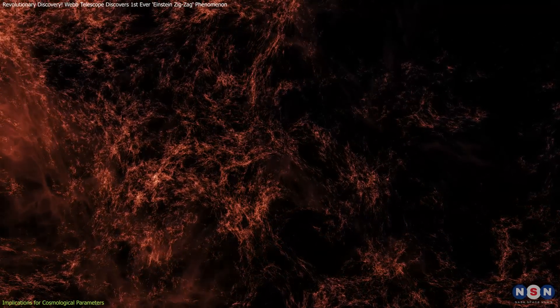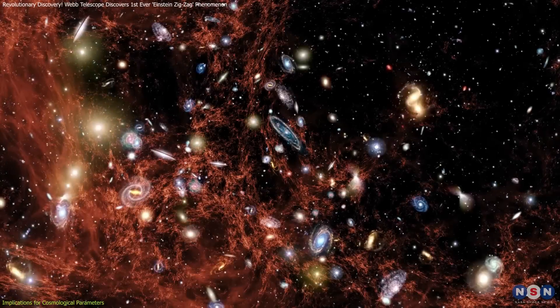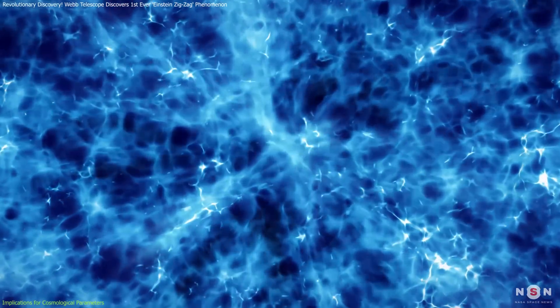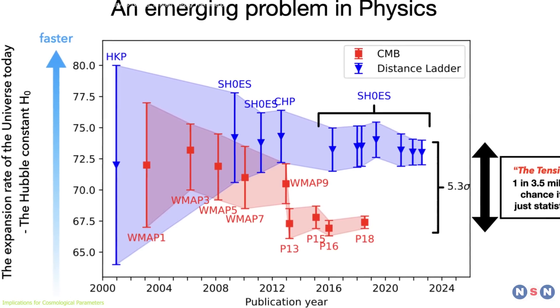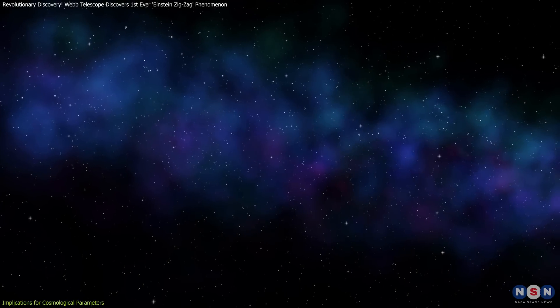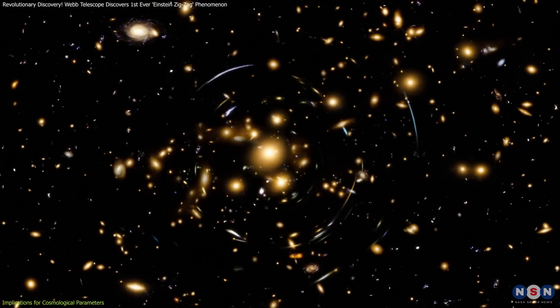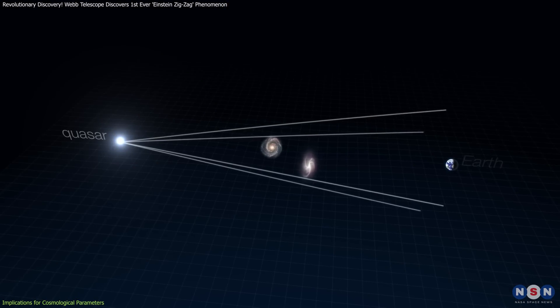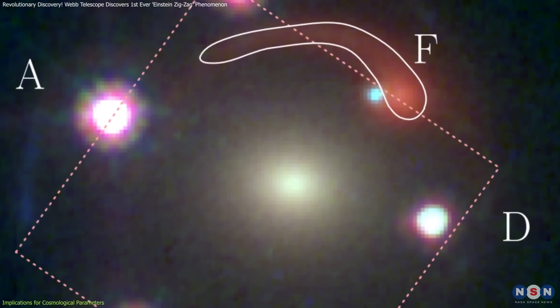Beyond addressing the Hubble constant, this discovery opens doors to exploring dark energy — the enigmatic force responsible for the accelerated expansion of the universe. Representing about 70% of the universe's energy budget, dark energy remains one of the biggest mysteries in physics. The precise lensing configuration of this system allows for simultaneous constraints on both the Hubble constant and dark energy parameters, an advantage not typically possible with standard gravitational lenses. By disentangling these parameters, which often interact in ways that complicate independent measurements, this system allows for more accurate and independent results.